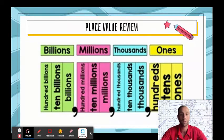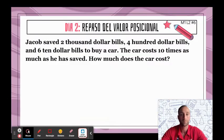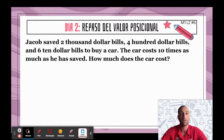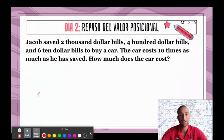Let's take a look at some questions and problems and get going. Jacob saved 2 $1,000 bills, 4 $100 bills, and six $10 bills to buy a car. The car costs 10 times as much as he has saved. How much does the car cost?